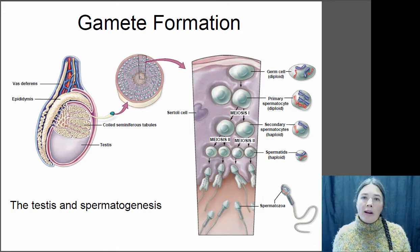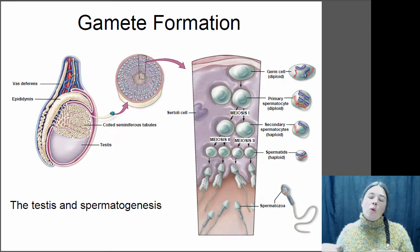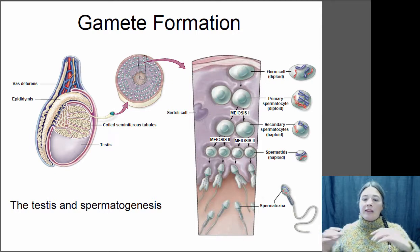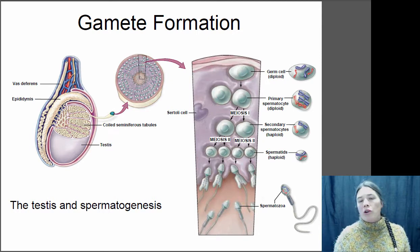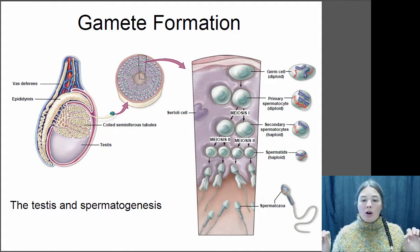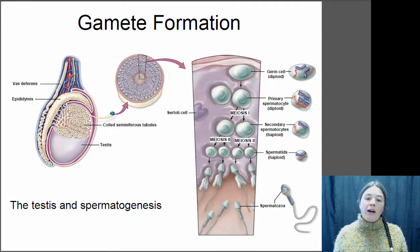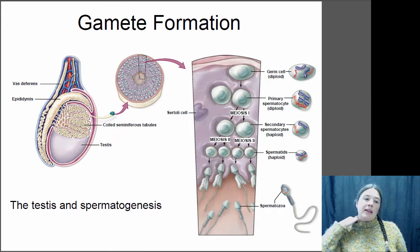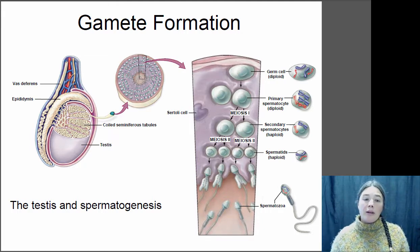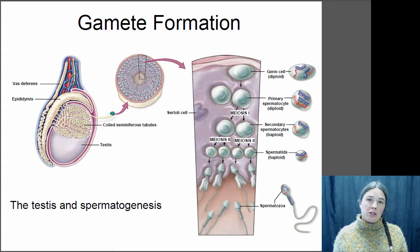As it migrates, it divides again. It goes through meiosis — remember, meiosis is the type of cell division where you get half as many chromosomes as you used to have. The end product of meiosis is four new spermatids, which are the cells that will actually become sperm. They then mature for a little while and are released into the center of the seminiferous tubule, then move into a structure called the epididymis where they're stored until ejaculation.